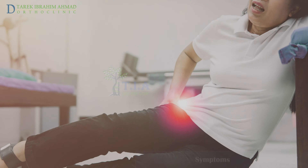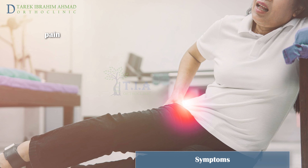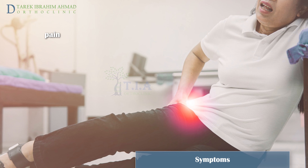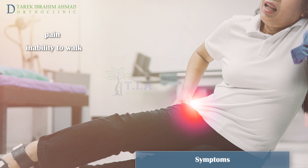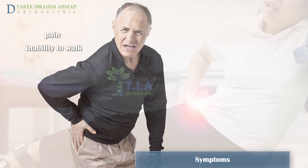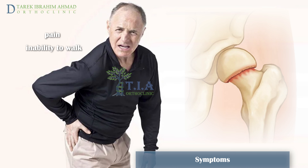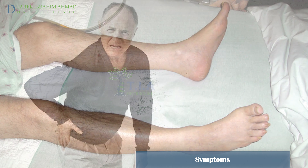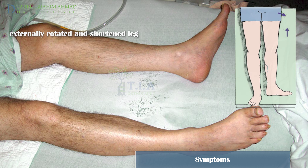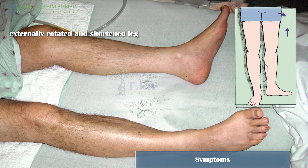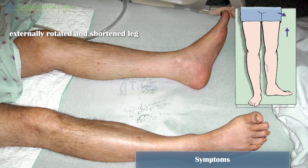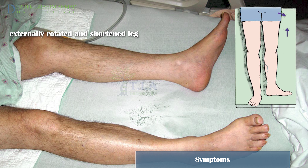Symptoms include the sudden onset of hip pain either before or following a fall and the inability to walk, although some patients with a minimally impacted fracture may continue to bear weight. A displaced hip fracture usually involves a significant amount of groin pain, and the leg may appear externally rotated and shortened.